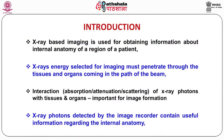To introduce the subject: for obtaining information about internal anatomy of a region of a patient, X-ray based imaging technique is used. The X-ray energy selected to produce the image must be sufficient to penetrate through the tissues and organs in the path of the beam. It is also important that X-ray photons interact through the process of absorption, attenuation or scattering with the tissues and organs concerned, so that the photons detected by the image recorder contain useful information regarding the internal anatomy.